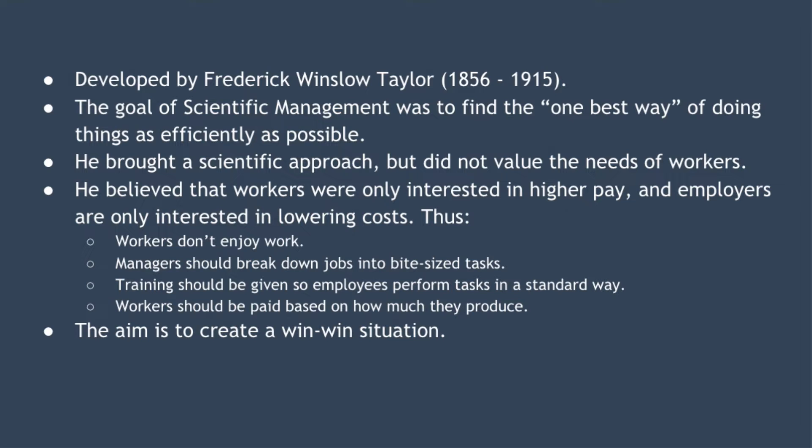Taylor believed that there were universal laws which governed efficiency and that these laws were independent of human judgment. The goal of scientific management was to find this one best way of doing things as efficiently as possible. Taylor brought a very scientific approach to productivity, and it's important to realise that he did not value the human needs of workers.